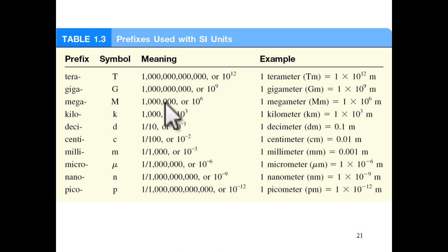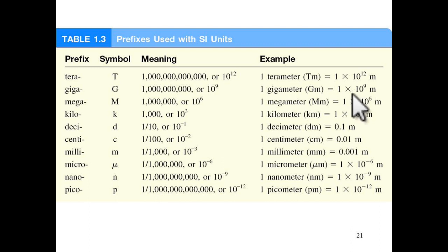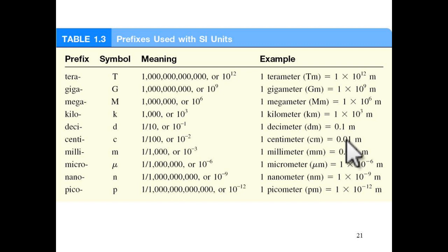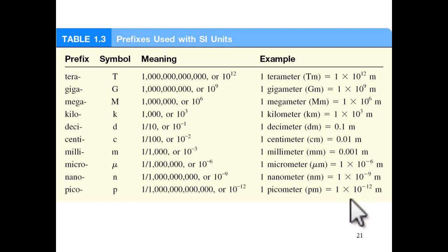The value of each prefix: tera is 10¹², giga is 10⁹, mega is 10⁶, kilo is 10³ — very common. Deci is 10⁻¹, centi is 10⁻², milli is 10⁻³, micro is 10⁻⁶, nano is 10⁻⁹, and pico is 10⁻¹².